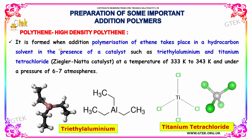High density polythene is formed when addition polymerization of ethene takes place in a hydrocarbon solvent, in the presence of a catalyst such as triethylaluminium and titanium tetrachloride, at a temperature of approximately 333 to 343 Kelvin and at a pressure of 6 to 7 atmospheres.